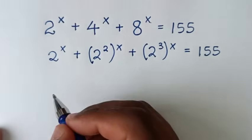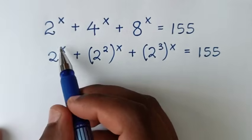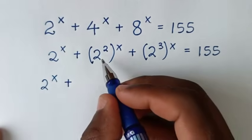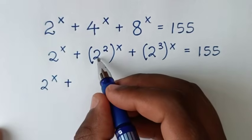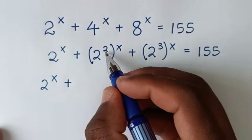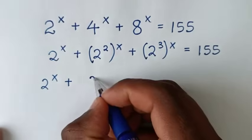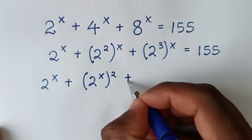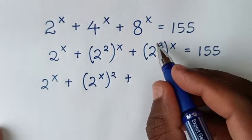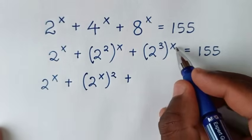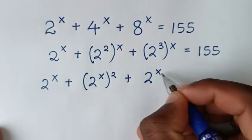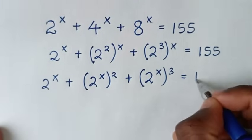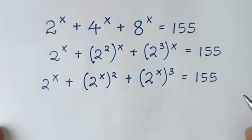In the next step, we will make 2 power of x in common. So it will be 2 power of x, plus — to make 2 power of x, we will take power of x inside the bracket and power of 2 outside the bracket — so it will be 2 power of x bracket, power of 2 outside, plus, similarly taking power of x inside and power of 3 outside, so it will be 2 power of x bracket, power of 3 outside the bracket, is equal to 155.